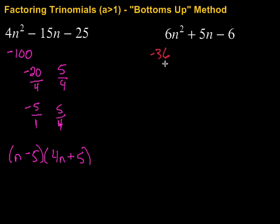Then factors of negative 36 that are going to combine to give me positive 5. Let's see. How about 9 and negative 4? Those would combine to give me that positive 5. So I've got those. Then I'm going to divide each one by A. So over 6, over 6.